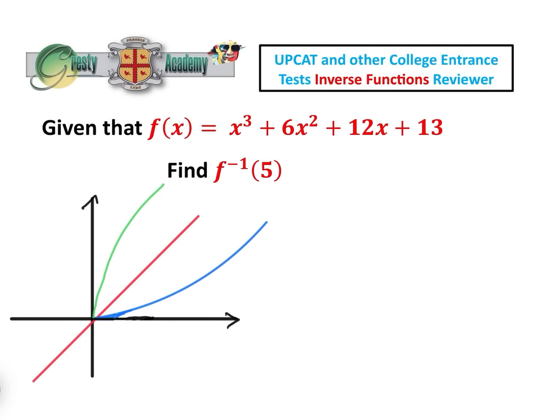This is a fairly common question type on college entrance tests such as UPCAT, GRE, and GMAT. We are asked to find the value of an inverse function at a particular value. So we're given f(x) equals x cubed plus 6x squared plus 12x plus 13, and we're asked to find the inverse function at the value 5.